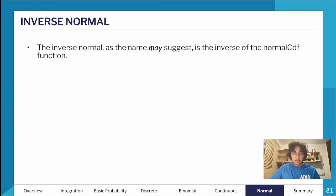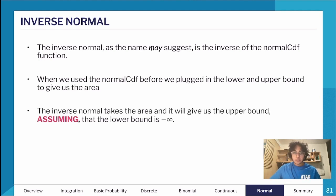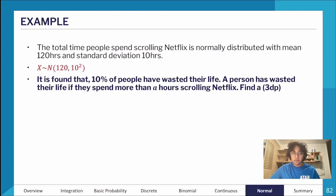Let's talk about the inverse normal. The inverse normal is the inverse of the normal CDF — whereas the normal CDF gives us the probability, the inverse normal gives us the upper bound, assuming we're finding the area to the left of a value. It always finds the area to the left of a given value.